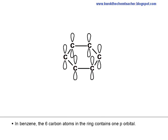In benzene, the six carbon atoms in the ring contain one p-orbital. The p-orbital can actually overlap with each other.